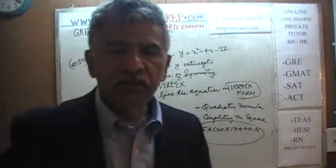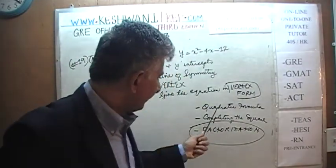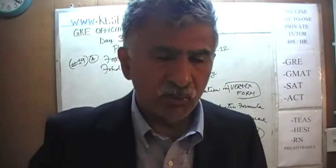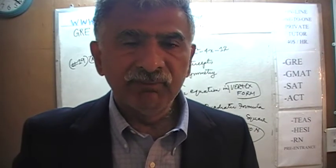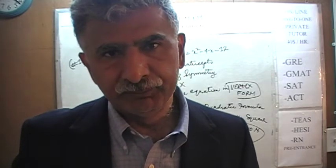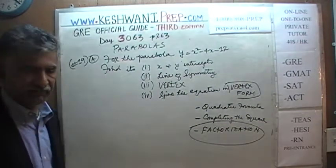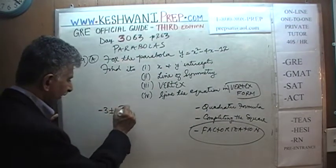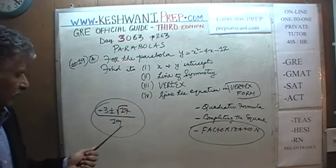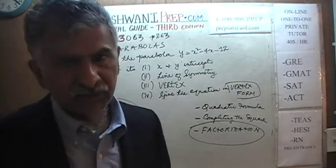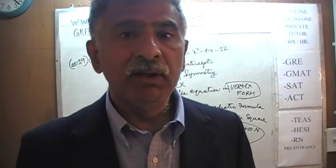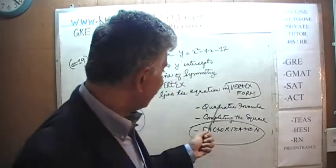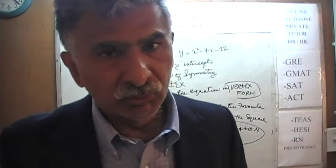Most people reach for factorization, but it is the weakest of the three methods. Factorization only works if the roots happen to be nice whole numbers. If the roots were something like negative 3 plus or minus 17 squared over 19, there is no way factorization would find them. We will start with factorization to see if it works here, and then do the other methods.